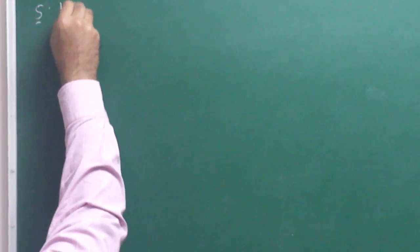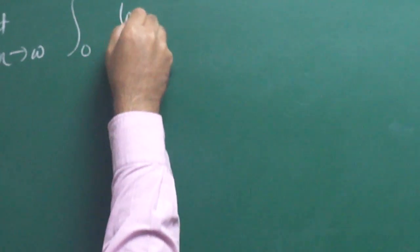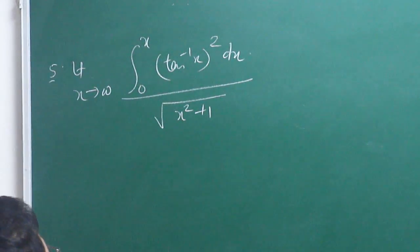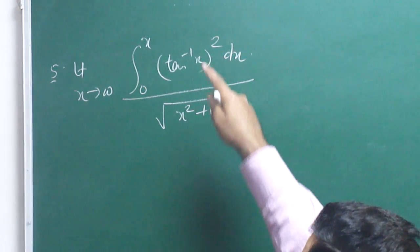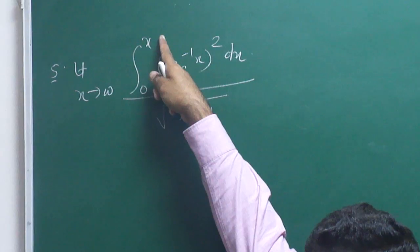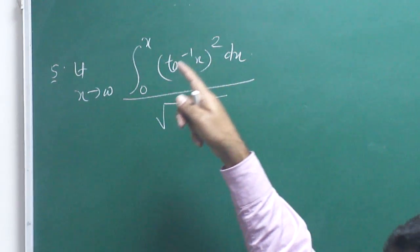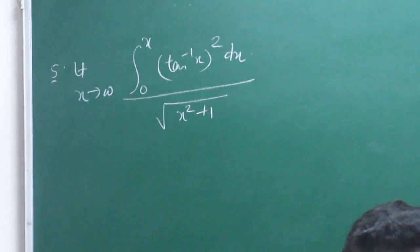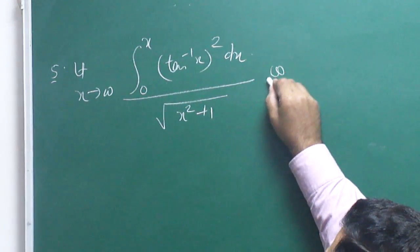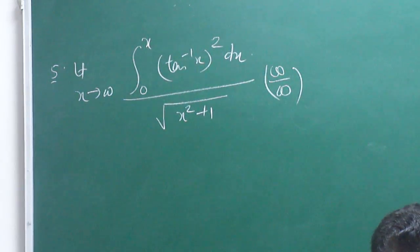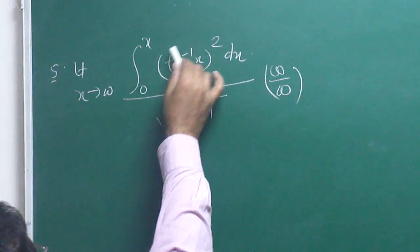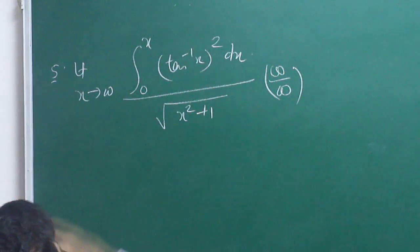Question 5: limit x tends to infinity of [integral from 0 to x of (tan⁻¹x)² dx] divided by √(x² + 1). As x → ∞, the upper limit goes to infinity, so the integral goes to infinity, and the denominator also goes to infinity — this is an ∞/∞ form. We need Newton-Leibniz rule. Differentiating the numerator: (tan⁻¹x)² · 1. Differentiating the denominator: 1/(2√(x²+1)) · 2x = x/√(x²+1).